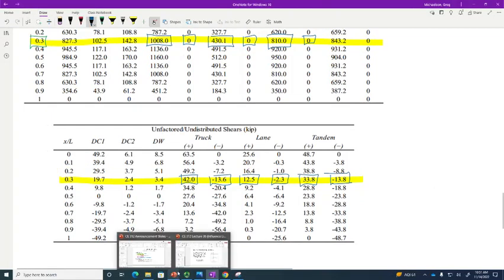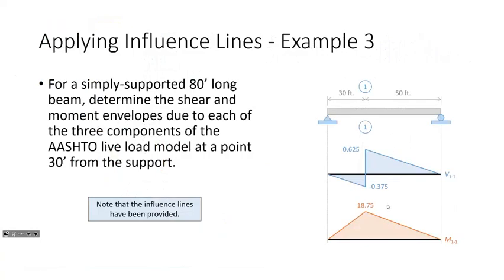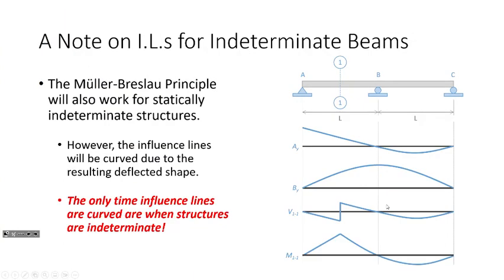The very last thing I want to show you: recall that influence lines are always straight lines for statically determinate structures. For indeterminate structures, they may be curved. When you remove the ability to resist response at a given point on an indeterminate structure, it doesn't become unstable — it actually deforms, producing a curved influence line. You would draw these quantitatively using software or using methods like Müller-Breslau with stiffness approaches. The only time an influence line is curved is when structures are statically indeterminate.